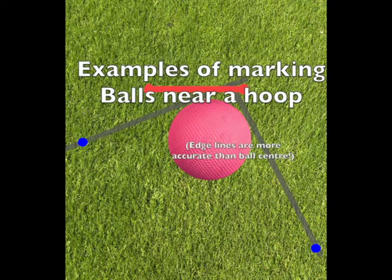Whenever possible, it is better to mark a ball on the outside of the ball, viewing the inside of the hoop, in preference to marking markers across the middle of the ball, which is less precise.